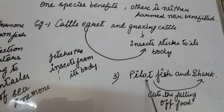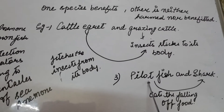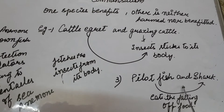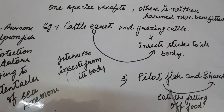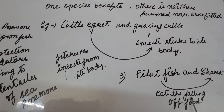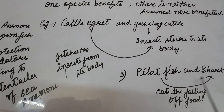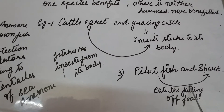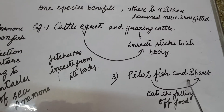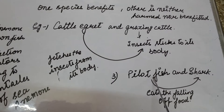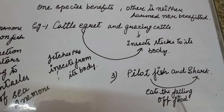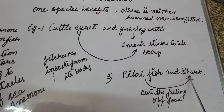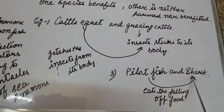Another example is the interaction between pilot fish and shark. The pilot fish always accompanies the shark without getting attached to it, and the pilot fish eats the falling food when the shark is eating its prey.